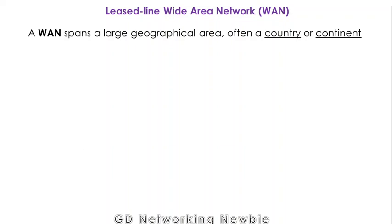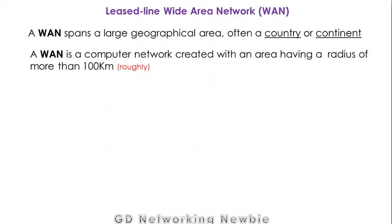Hi everyone. Today we are going to discuss a Leased Line Wide Area Network, or Leased Line WAN. A WAN is a wide area network which spans a large geographical area of a country or continent. We can also define a wide area network as a computer network created within an area having a radius of more than 100 kilometers.